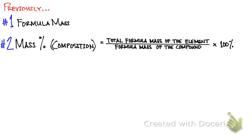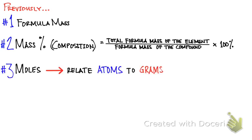Percent composition by mass can be calculated using the formula shown here. We also covered the mole concept, where a mole is a unit. The concept of moles basically allows us to relate the number of atoms of a given element to its mass.